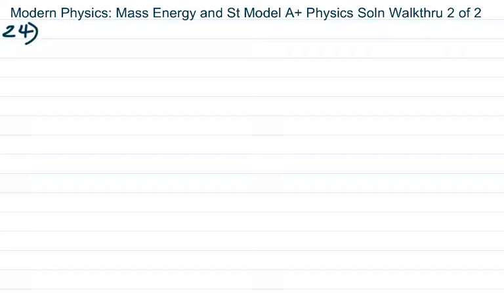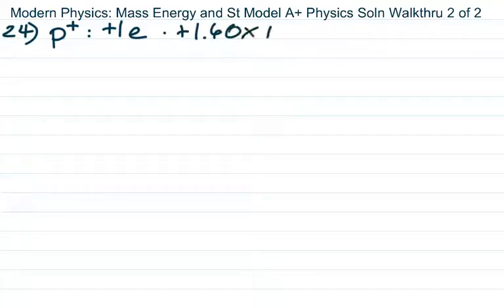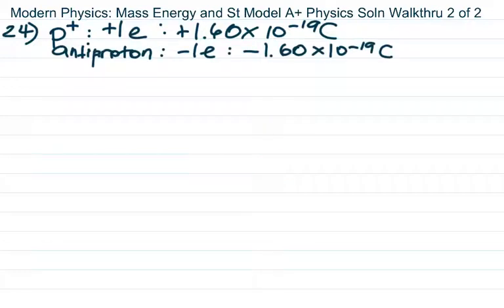Number 24 asks for the sign and charge in coulombs of an antiproton. A proton is plus one elementary charge, and an elementary charge is 1.6×10⁻¹⁹ coulombs. Antimatter has the opposite charge sign but same mass as its regular matter counterpart. So an antiproton would be negative 1.6×10⁻¹⁹ coulombs.